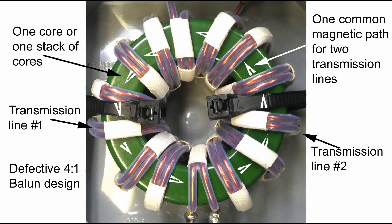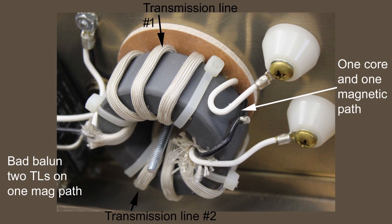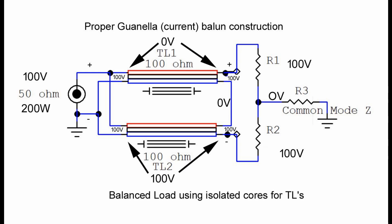The balun is supposed to be a balun with two independent 100 ohm transmission lines that are in series at the output and in parallel at the input. But both of these transmission lines are sharing a common magnetic path and what this does is it locks the balun up so that the balun really can't balance anything in the outside world.